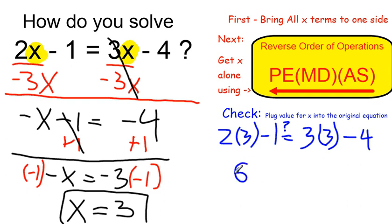2 times 3 is 6. So on the left, I have 6 minus 1. 3 times 3 is 9. So on the right, I have 9 minus 4. 6 minus 1 is 5. 9 minus 4 is also 5.